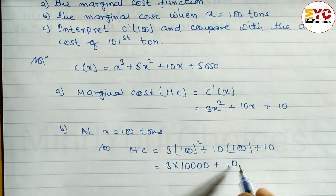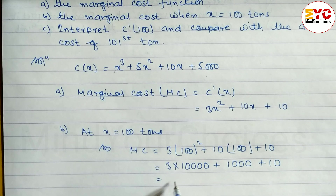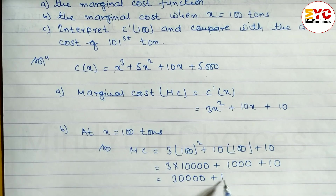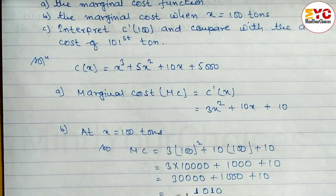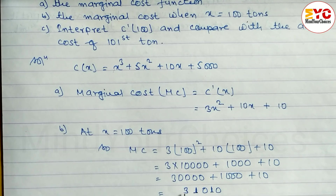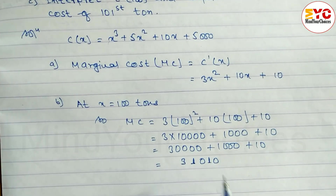Continuing the calculation: 30,000 plus 10 times 100 which is 1,000, plus 10. Adding these: 30,000 plus 1,000 plus 10 equals 31,010. So the marginal cost at x equal to 100 tons is 31,010.